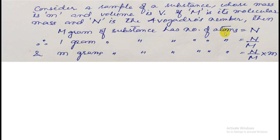Therefore, for m grams—which is the mass of the sample we have taken—m grams will have total number of atoms. For one gram it is N by M, so for m grams it will be multiplied by m, giving us the total number of atoms present in m grams.